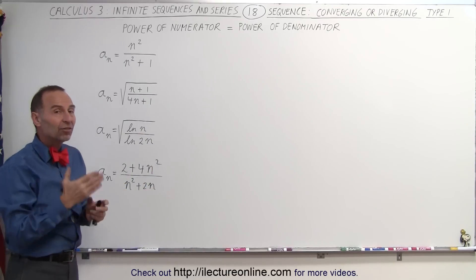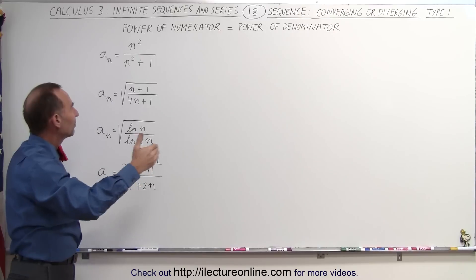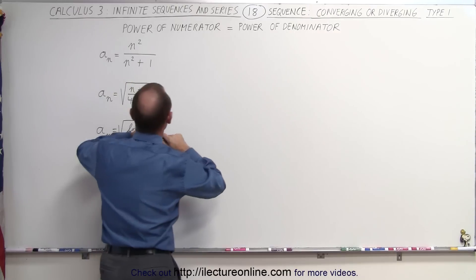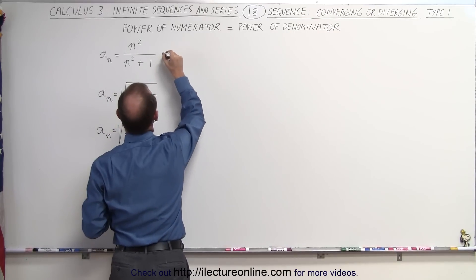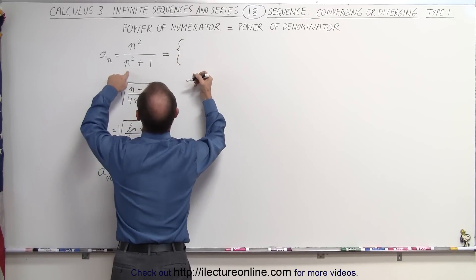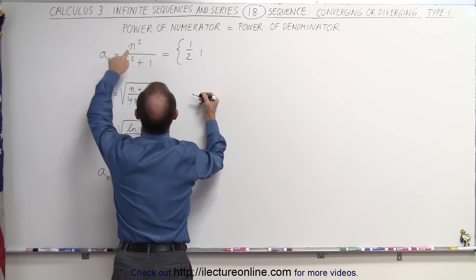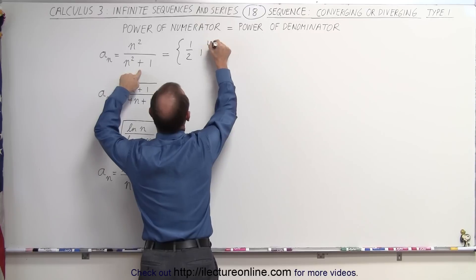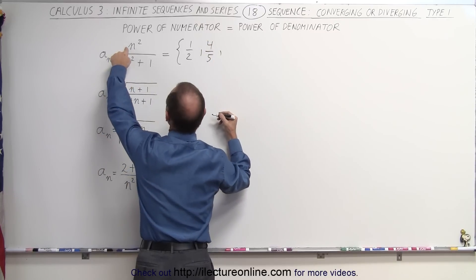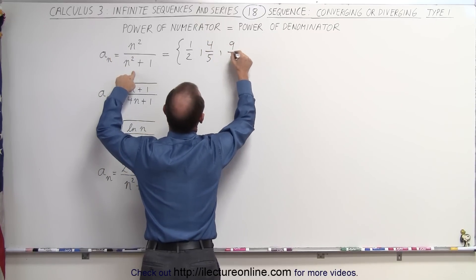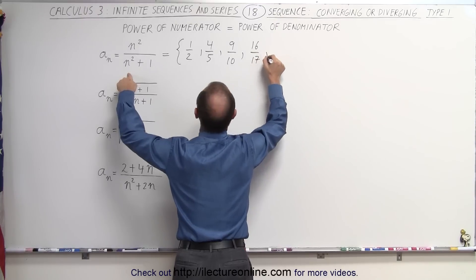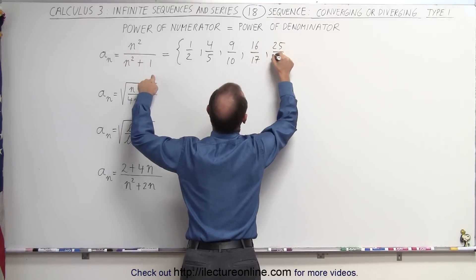One way to find the limit is to simply write out the sequential terms and see where the number seems to be going. When n equals 1, we have 1 divided by 1 plus 1, which is 1 half. When n equals 2, we have 4 over 5, or 4 fifths. When n equals 3, we have 9 tenths. When n equals 4, we have 16 seventeenths. When n equals 5, we have 25 over 26.